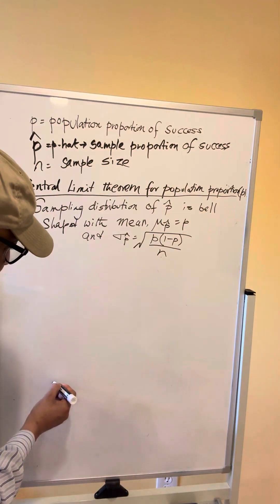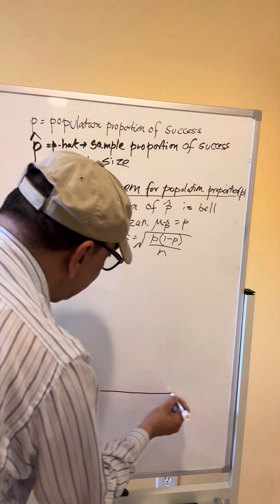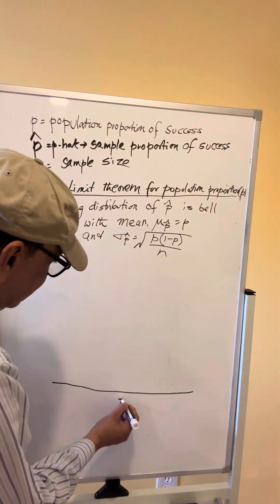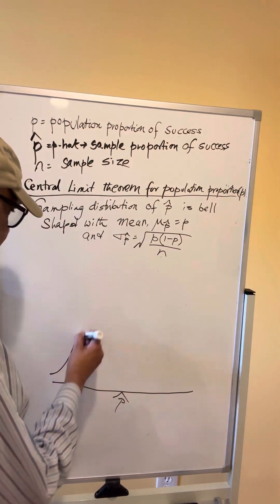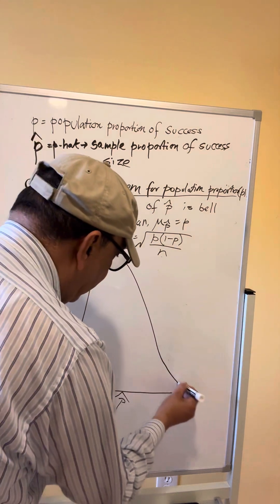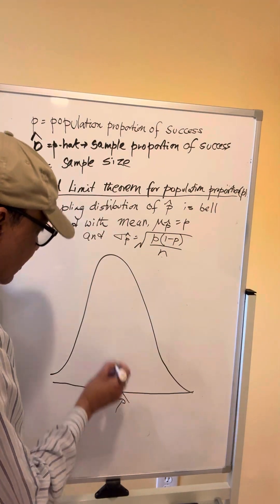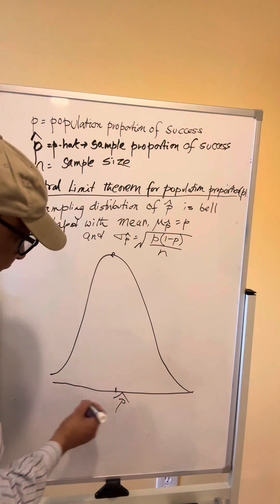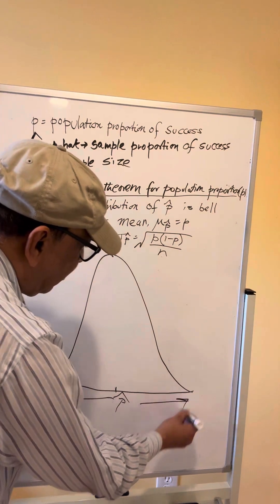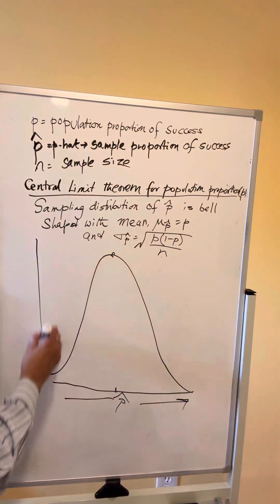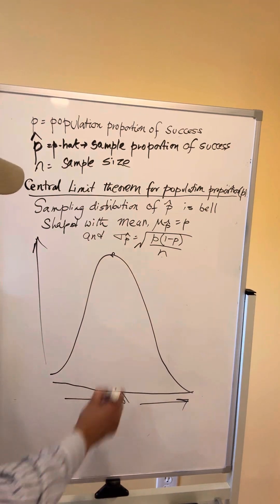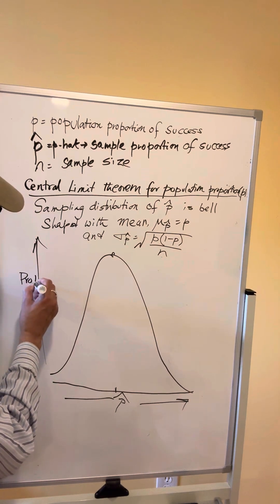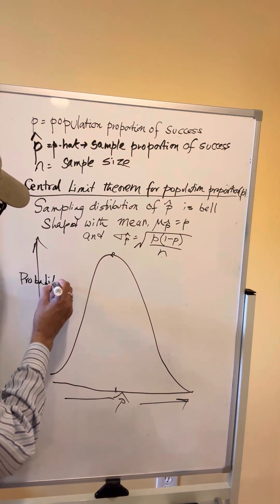So basically the sampling distribution or probability distribution of P hat is bell shaped like this. P hat is on the horizontal axis and probability is on the vertical axis. The point where the bell shaped distribution has a peak on the horizontal axis, or highest relative frequency, this is the center of the distribution.